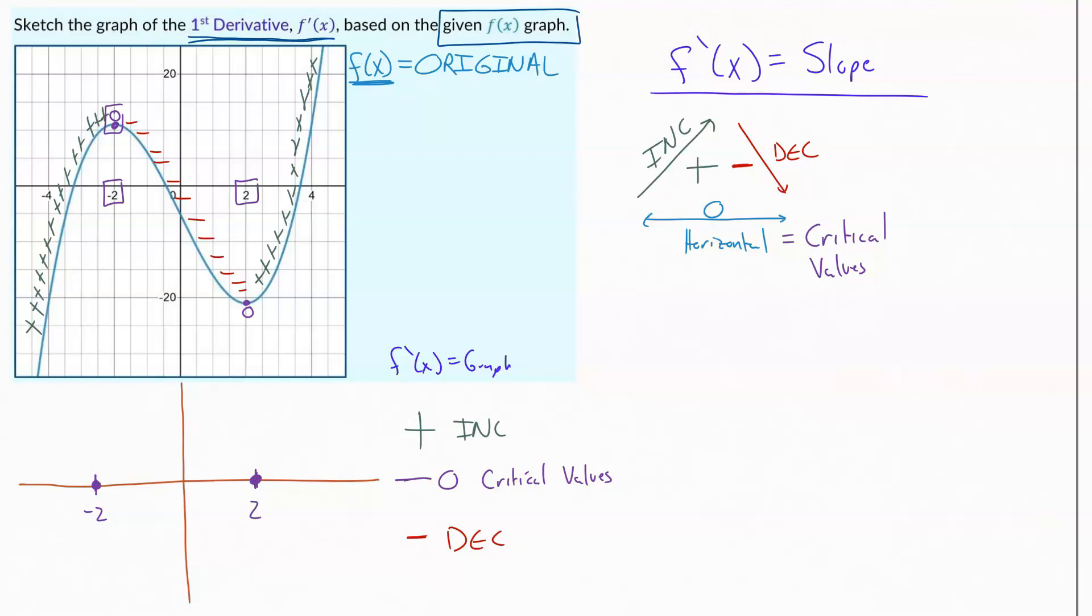So at two, the slope is zero. Now what we do is we just look to the left and look to the right. So as I look to the left of zero over here, I know that I'm up in the positive space because that graph is all increasing.